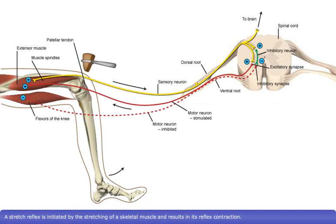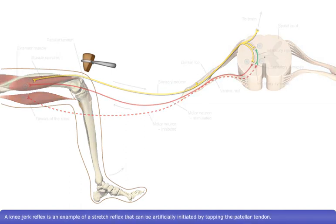A stretch reflex is initiated by the stretching of a skeletal muscle and results in its reflex contraction. A knee-jerk reflex is an example of a stretch reflex that can be artificially initiated by tapping the patellar tendon.